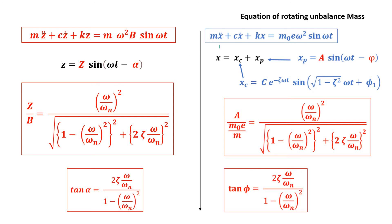The solution is the sum of complementary solution and particular solution. The complementary solution represents transient vibrations which die out after some time. After a while, under steady state, only the particular solution remains, which is Z = A sin(ωt − φ), where A is the amplitude of vibration of the mass and φ is the phase difference.